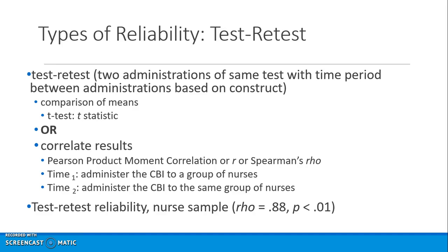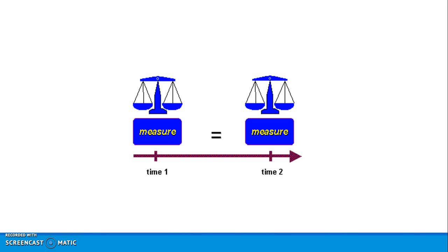Test-retest involves two administrations of the same test with a time interval. A t-test or correlation coefficient can be used — for example the Pearson, which is an interval level correlation coefficient, or Spearman's rho, which is a non-parametric one for ordinal level data. If you give the Caring Behaviors Inventory to a group of nurses at time one and time two, you can calculate a Pearson r or Spearman rho, and the closer the result is to 1.0 the stronger the correlation.